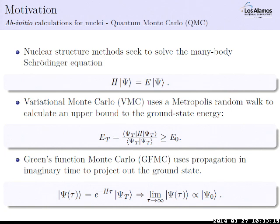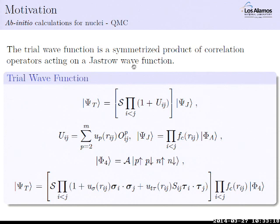The form of the trial wave function is a symmetrized product of correlation operators acting on what we call a Jastrow wave function. These correlation operators U_ij are given by radial functions U_p multiplied by operators that come from your nuclear Hamiltonian. You can include however many you want. For helium-4 and lighter, it's sufficient to have an operator structure that captures one-pion-exchange physics. This includes the tensor operator, which I'll define on a later slide.